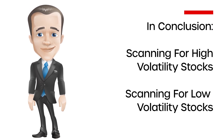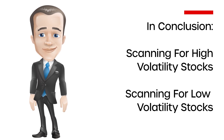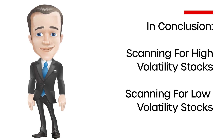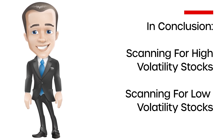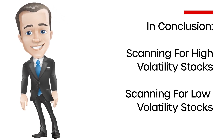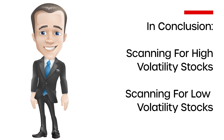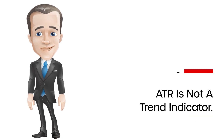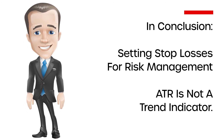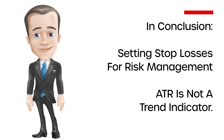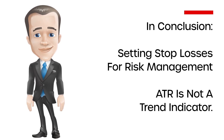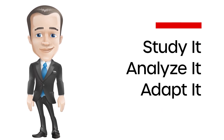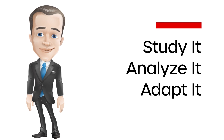I recommend the ATR for trading and investing. Scanning for high-volatility stocks can be a great tool, especially in an overbought market. Someone looking for a low-volatility portfolio can scan for low ATRs, which would bring a low alpha reading. Of course, use it for setting stop losses and risk management. Remember, the ATR — average true range — is not a trend indicator. If you like this video, hit the like button and please subscribe. Study it, analyze it, adapt it.